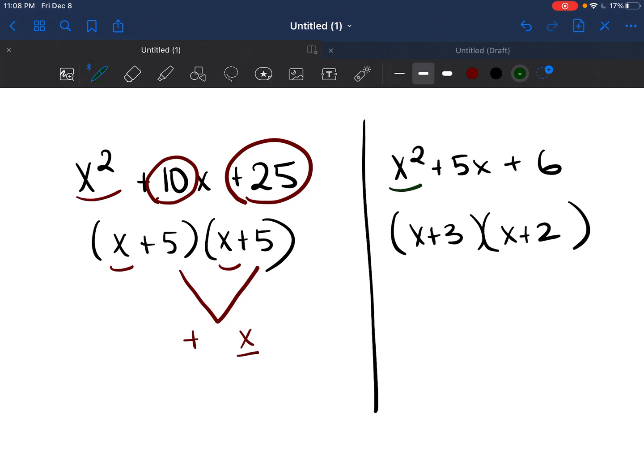We're going to go ahead and make our triangle. We're going to add and then multiply those numbers. 3 plus 2 is 5, so that's the center number. And then 3 times 2 is 6, so that's the final number.